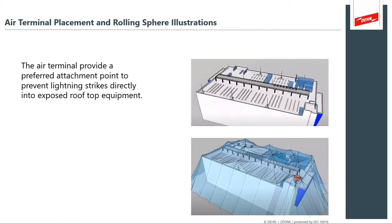Air terminal placement provides a preferred attachment point to prevent lightning from striking randomly into rooftop equipment. These illustrations show the modeling of a lightning protection system with air terminals placed strategically around the corners of a building, giving lightning a preferred attachment point. The rolling sphere step leader distance is depicted in the blue coverage model — everything below the theoretical coverage model is protected from a direct strike.